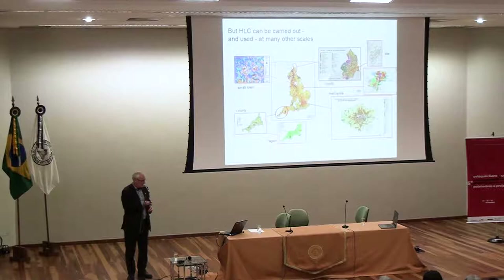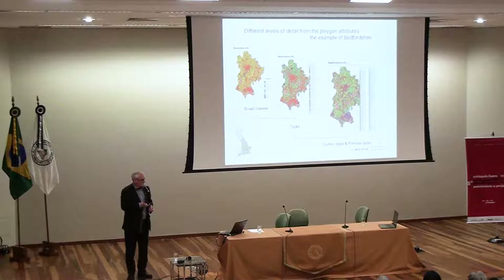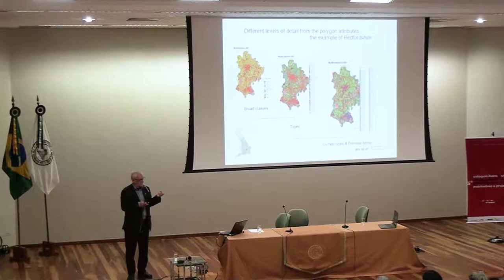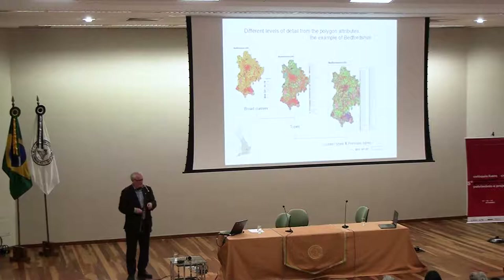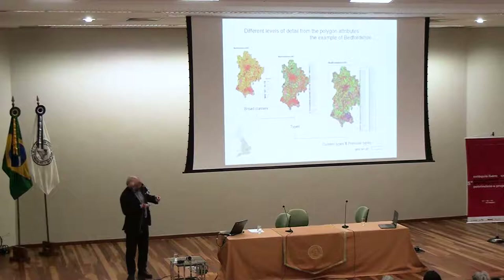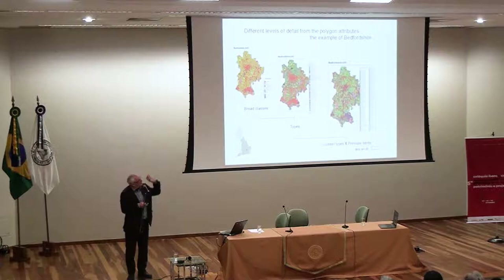A single HLC isn't just one map. It's a complicated GIS system with one layer of spatial polygons, but those hold many layers of attributes — data to do with the type of landscape, its history, its previous appearances, and even earlier appearances. The map on the left is a very simple, high-level, broad classification; bringing in more information at the types level gives a more complicated map; and the final map on the right brings in a lot more detailed attributes and becomes almost difficult to use at this scale.